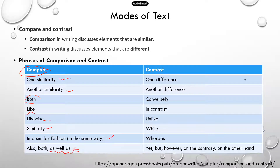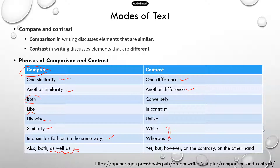For contrast, that's about differences. You could talk about one difference and then another. Signal words include: conversely, in contrast, unlike, while, whereas, however, on the contrary, and on the other hand. Those are all signals that the author is talking about differences.